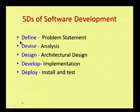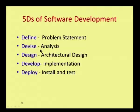The first D stands for Define — defining the software requirement, where the problem statement is defined. The second D is Devise — analyzing the actual problem and finding different solutions. The third D is Design — deciding what architecture to use based on the analysis. The fourth D is Develop — implementing the designed architecture. The fifth D is Deploy — installing the developed software and testing it. So the 5 D's are: define, devise, design, develop, and deploy.